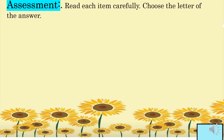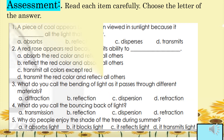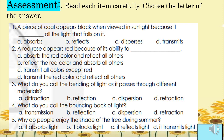For the assessment, read each item carefully and choose the letter of the answer. Number one: a piece of coal appears black when viewed in sunlight because it blank all the light that falls on it — A, absorbs; B, reflects; C, disperses; or D, transmits. Number two: a red rose appears red because of its ability to blank — A, absorb the red color and reflect all others; B, reflect the red color and absorb all others; C, transmit all colors except red; or D, transmit the red color and reflect all others.